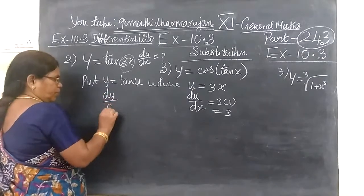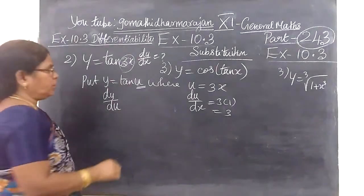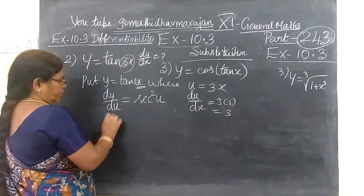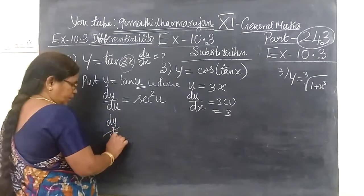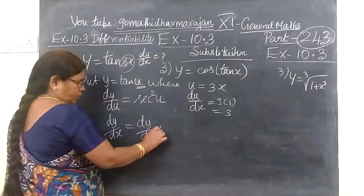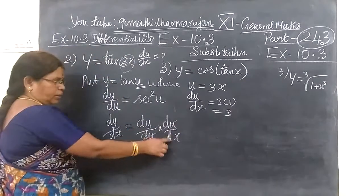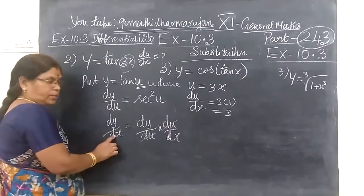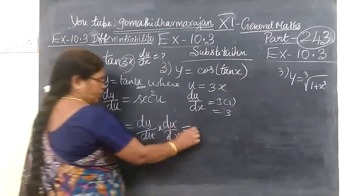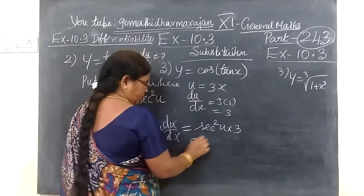So in this line, I know dy by du. Many times I told you — tan gives sec squared u. Now, dy by dx equals dy by du into du by dx. So, applying the general rule: sec squared u into 3.